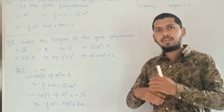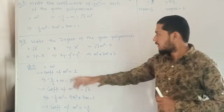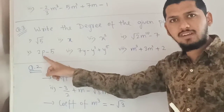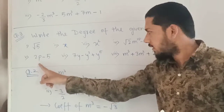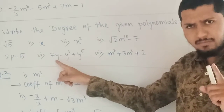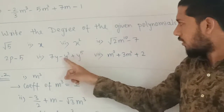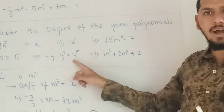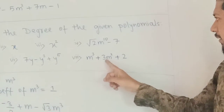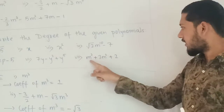For 2p minus 5: the degree of the constant 5 is 0, and the degree of 2p is 1, so the highest degree is 1 and the answer is 1. For 7y minus y cubed plus y raised to 5: the first term has degree 1, the second term has degree 3, and the third term has degree 5. Out of these three terms the highest is 5, so the degree of this polynomial is 5.